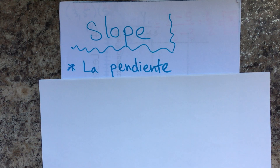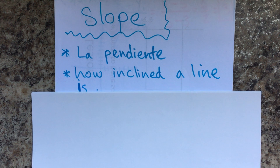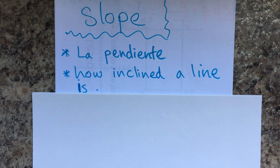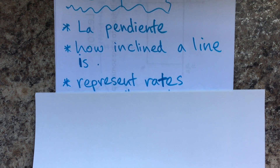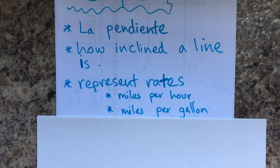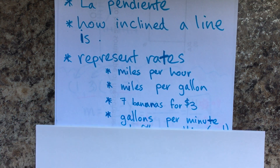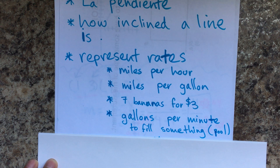The slope is how steep a line is, or how inclined a line is. You can find it in mountains, you can definitely find it in San Francisco when you're going up and down the street. It also represents rates — some examples are miles per hour, miles per gallon, seven bananas for three dollars, and gallons per minute when you're filling a pool.